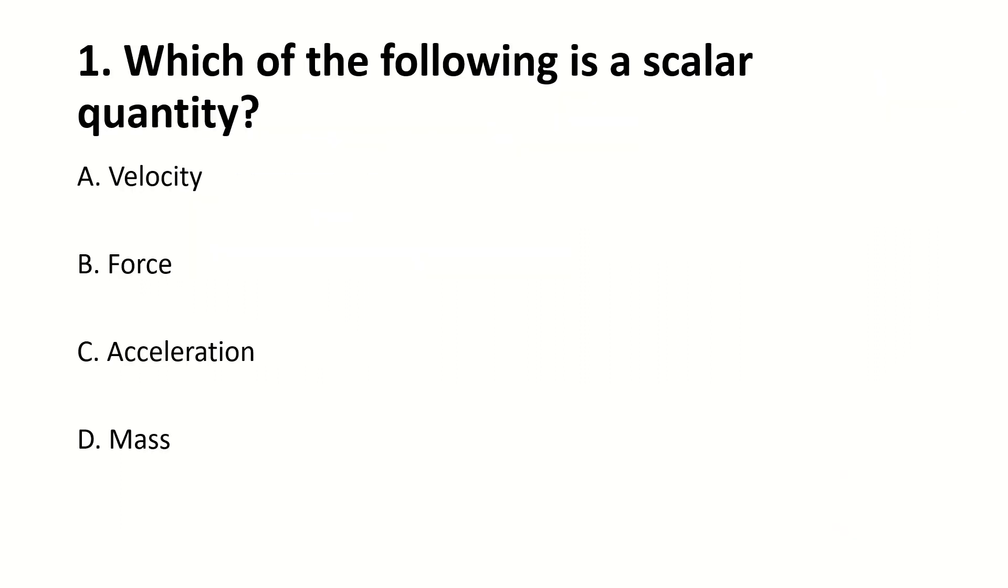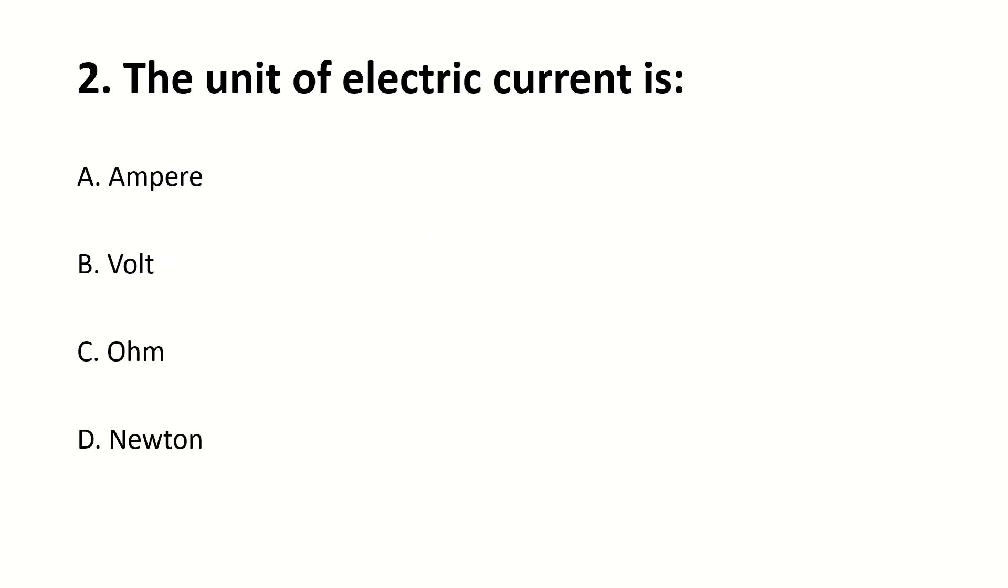Which of the following is a scalar quantity? Answer is D, mass. The unit of electric current is? Answer is A, ampere.